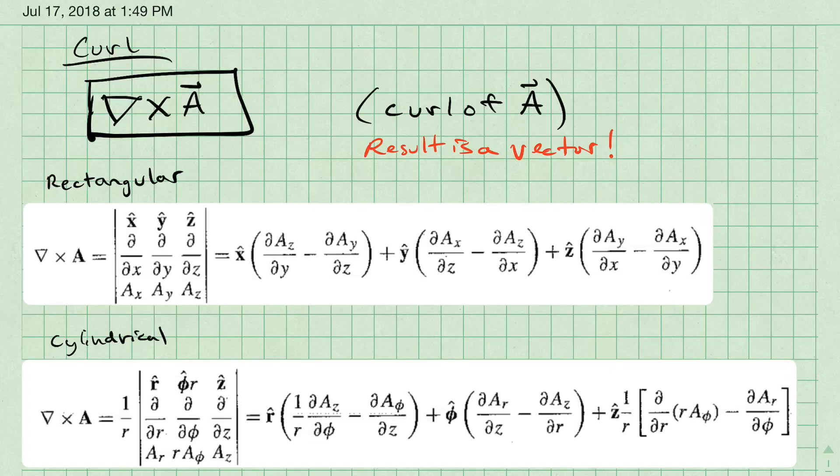In today's video, we are going to talk about calculating the curl of a vector field. The curl is written as del cross A, where A is a vector field.